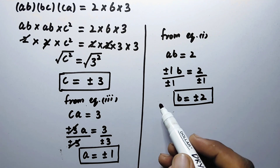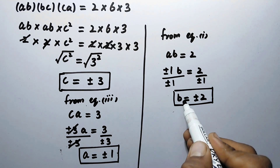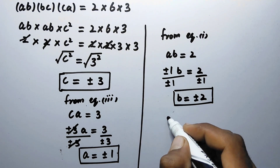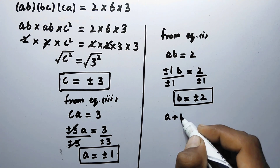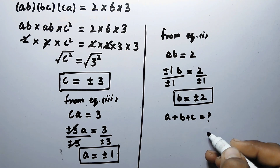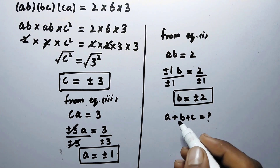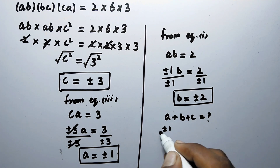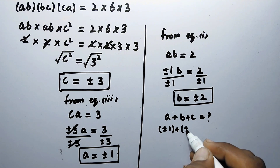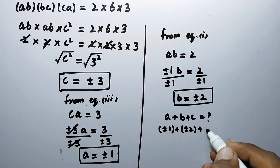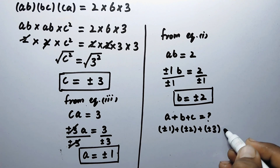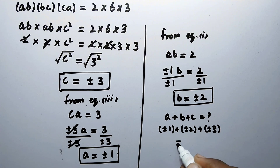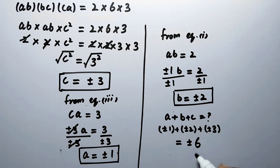That is the value of b. So here we have gotten the values of a, b, and c. But actually we have to find the value of a plus b plus c. So here we can find it easily by putting the values: plus or minus 1 plus plus or minus 2 plus plus or minus 3, and that is equal to plus or minus 6. That is the answer and the solution to this problem.